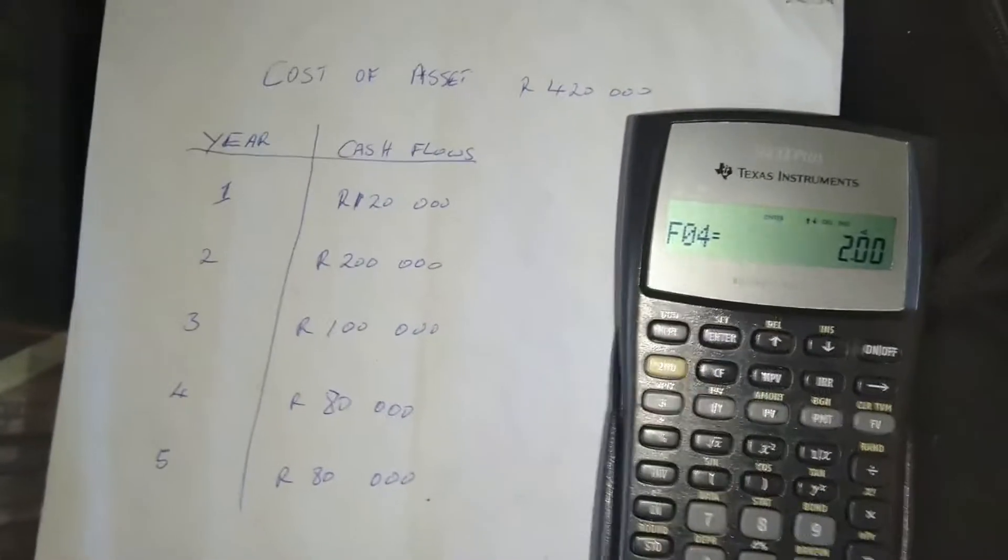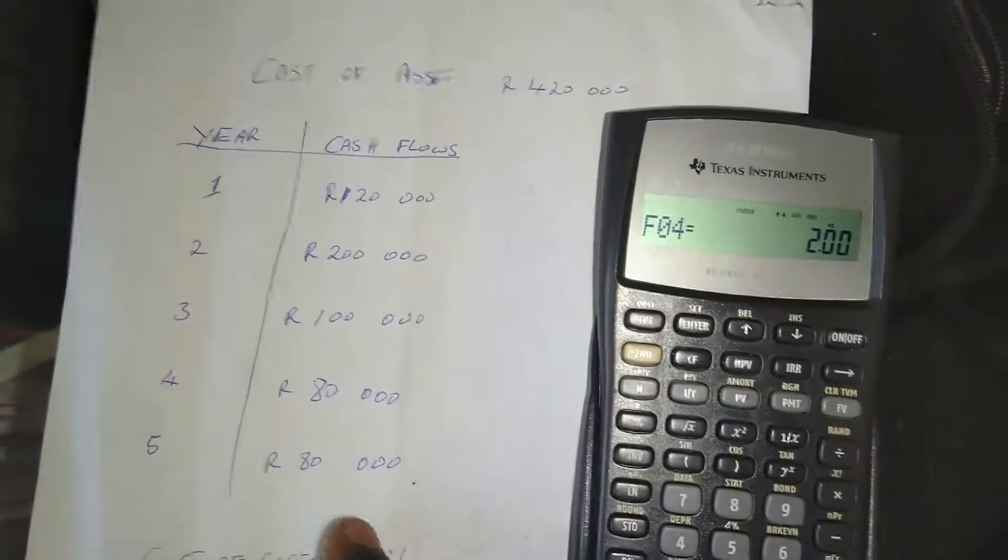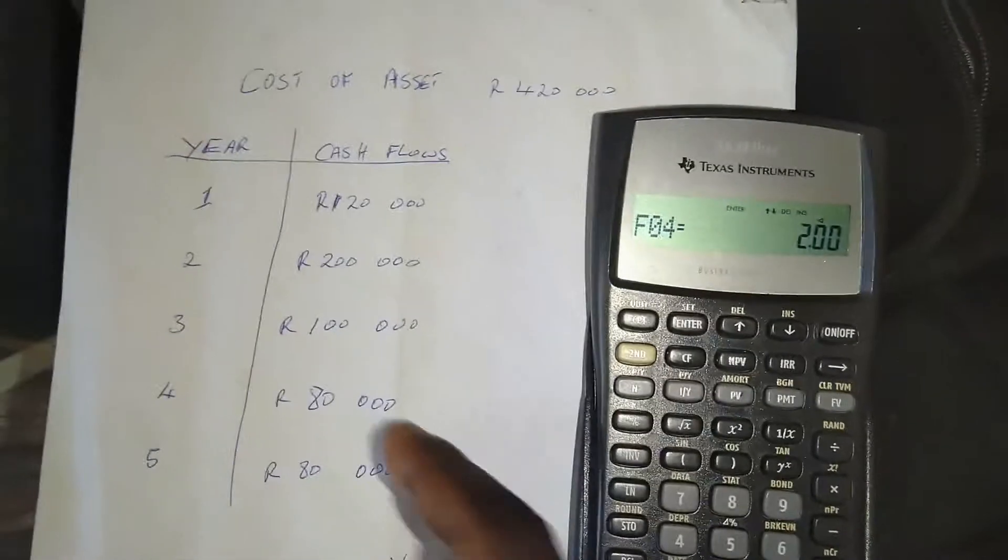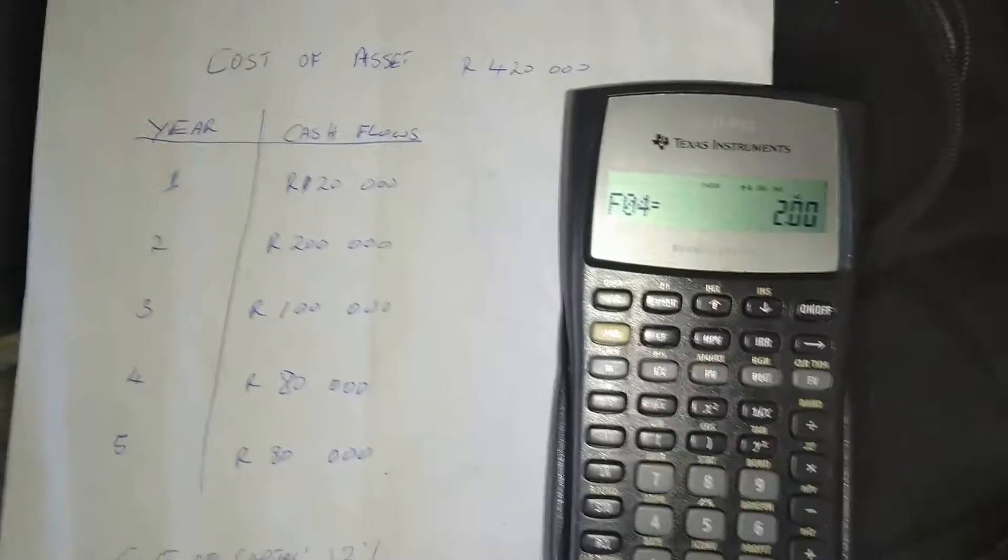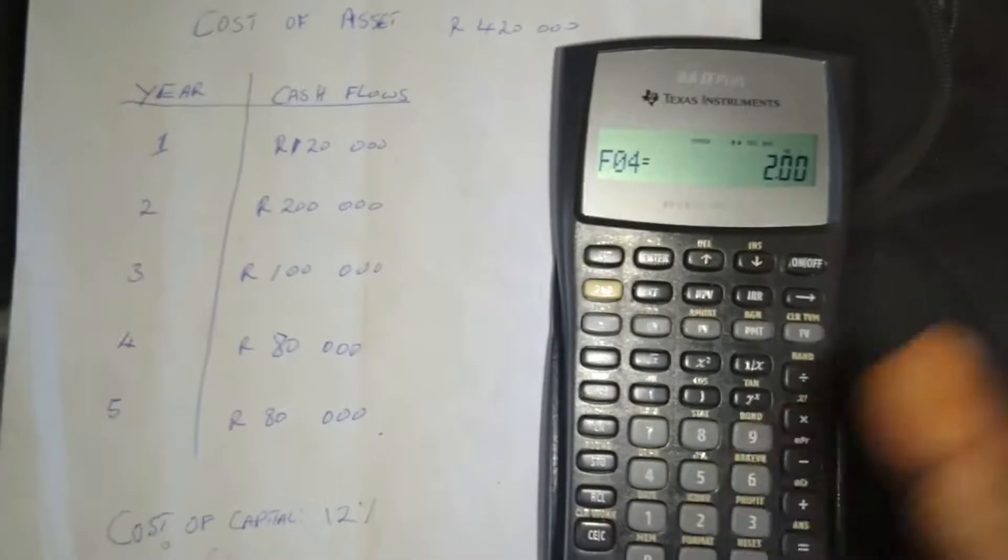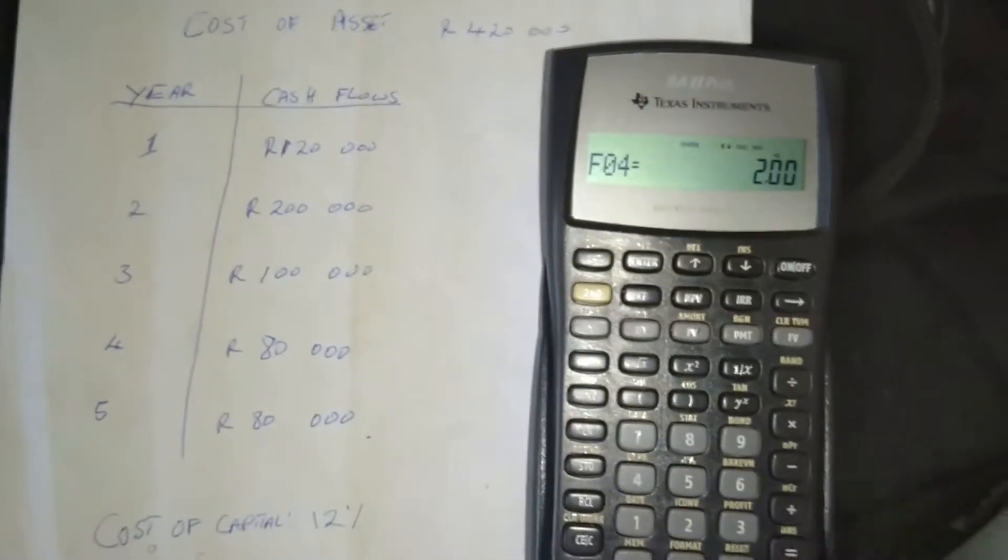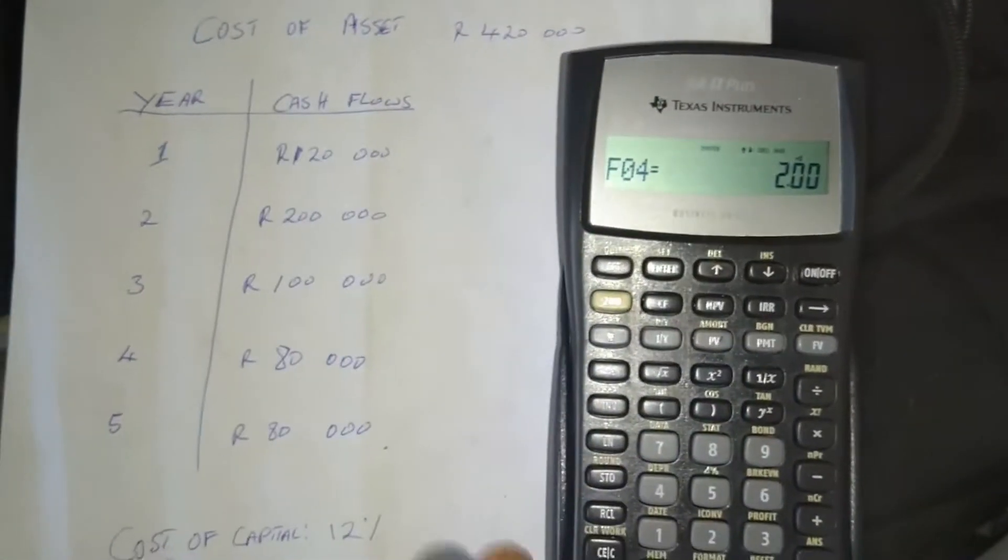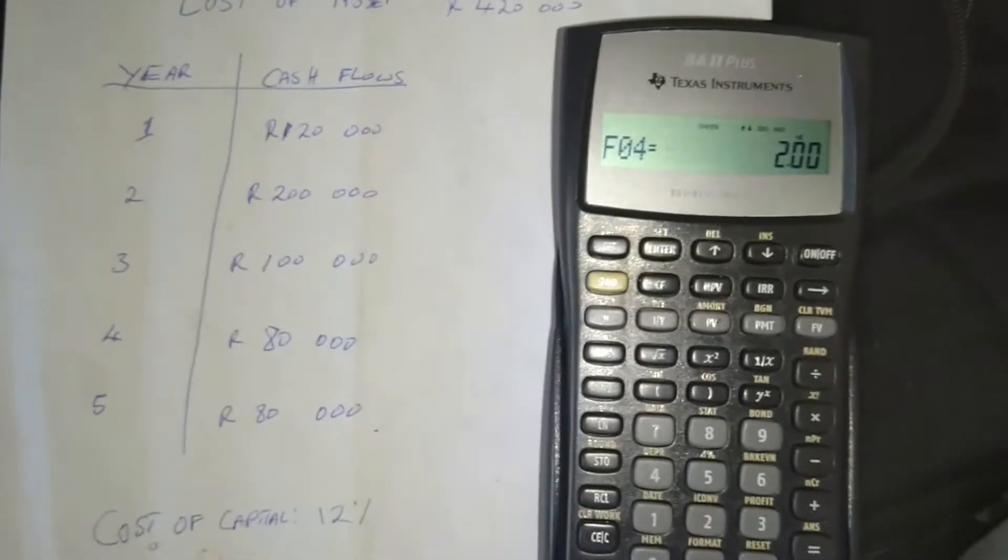So now we don't have to go to cash flow at year five and put the 80,000 rand again. So that is the main function of the frequency of cash flows. To just simplify your work and for you not to be inputting the same amount every time. So if cash flows occur in a row, you find out how many there are. And then frequency of cash flow, you put the amount and you press enter and you've put in the cash flows for all those years that occur in a row. And that is what that function is for.